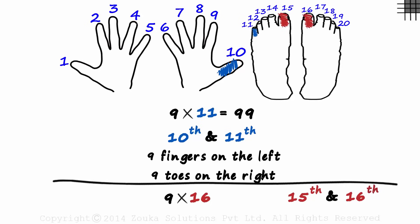How many on the left and how many on the right? 14 on the left, so we write a 14. And 4 on the right, so we write a 4. 9 times 16 is 144.